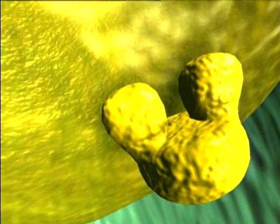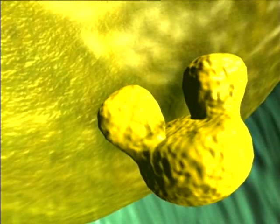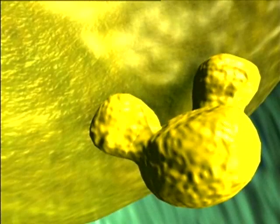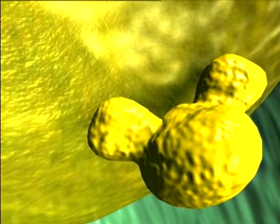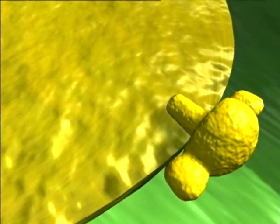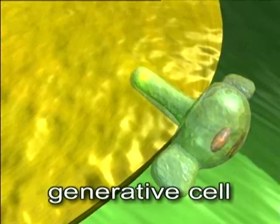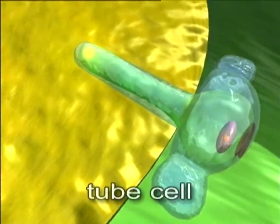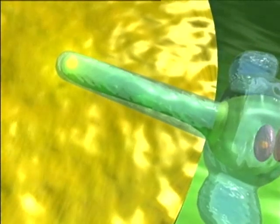Inside the ovule on the surface of the megasporangium, the pollen grain begins to swell and form a tube-like growth. The generative cell remains inside the pollen grain, while the tube cell directs the growth of the pollen tube.